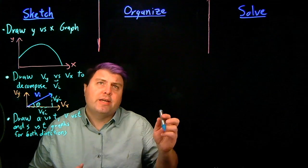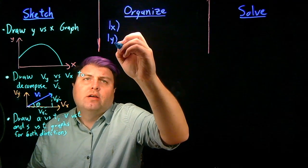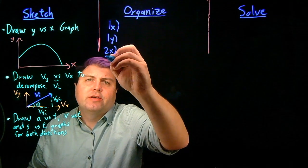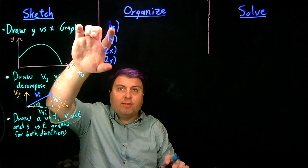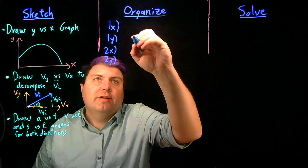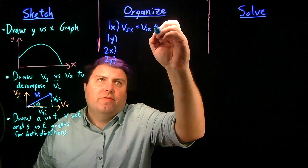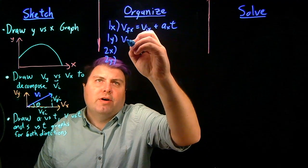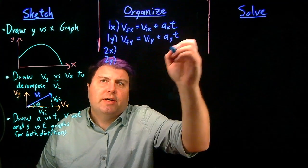In our organized step, we want to write out our equations. I'm just going to be explicit and write them in the x and the y direction as separate. So equation 1 in the x is going to be vfx equals vix plus ax times time. In the y, vfy equals viy plus ay times time.